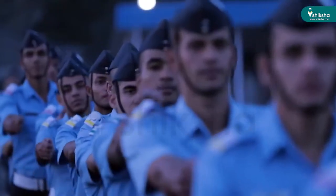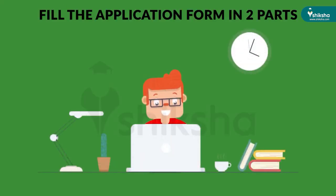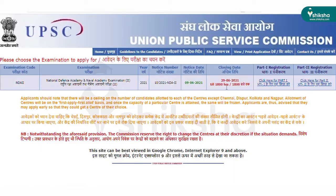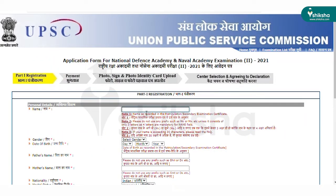The NDA 2 application form 2021 can be filled in two parts: Part 1 and Part 2. Part 1 of the NDA application form is registration. The registration page is divided into four parts: candidate registration, choosing the preferred branch, verifying details, and generation of the registration ID.